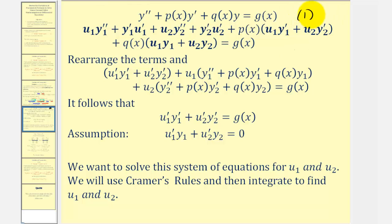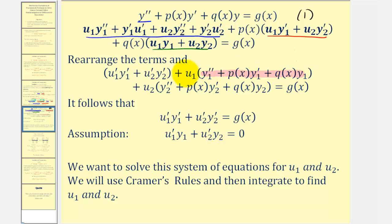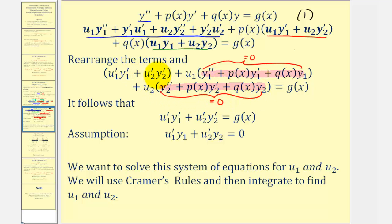Here is equation one. We substitute in y double prime, then p of x times y prime, then q of x times y. The algebra gets a little tricky here — we eliminate parentheses, distribute p of x and q of x, and rearrange the terms. Notice that all terms with a common factor of u₁ and all terms with a common factor of u₂ group together. Since y₁ and y₂ are solutions to the homogeneous differential equation, those grouped terms equal zero, and the equation simplifies to just two terms equaling g of x.